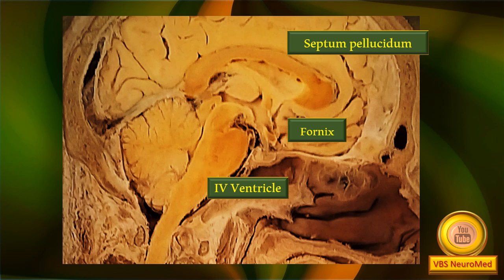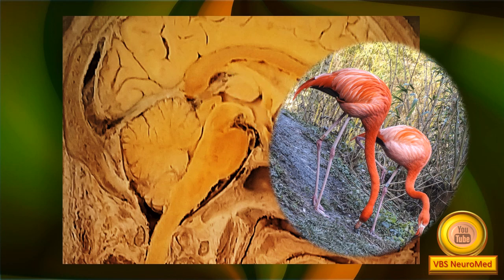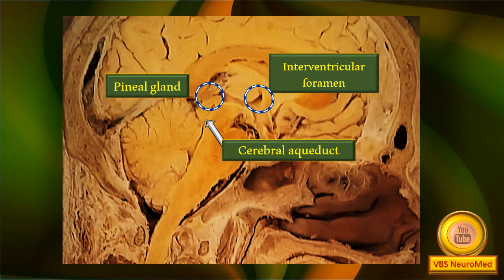Lower down, at the junction between the cerebellum and the brain stem, is the fourth ventricle, of which the triangular outline is seen in this sagittal section. The two lateral ventricles are on either side of this plane of section, hence their cavities are not visible. Nevertheless, the third ventricle has been pointed out in previous slides. The dotted circle is the point of communication right in front of the thalamus that communicates with the lateral ventricle — that's why it is called the interventricular foramen.